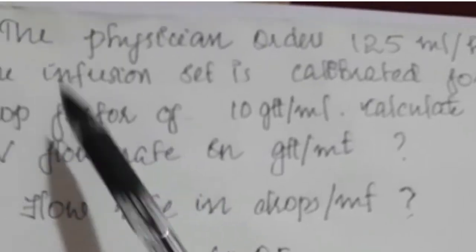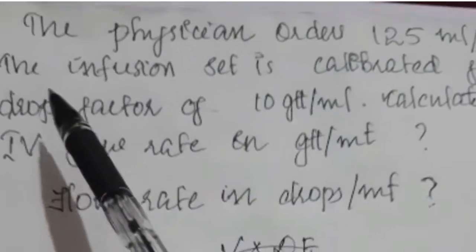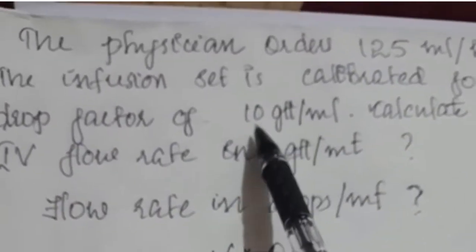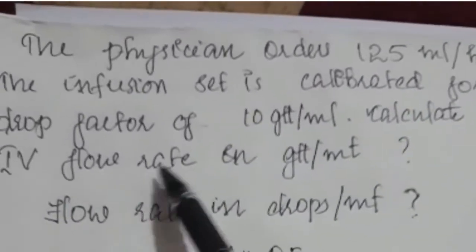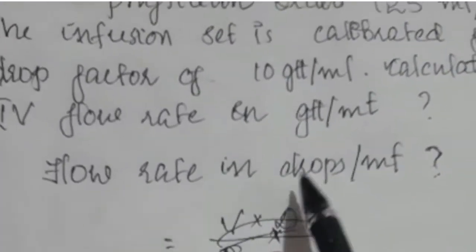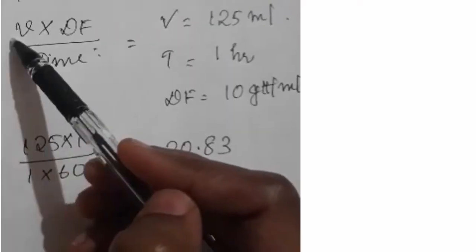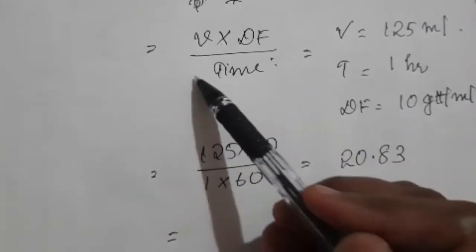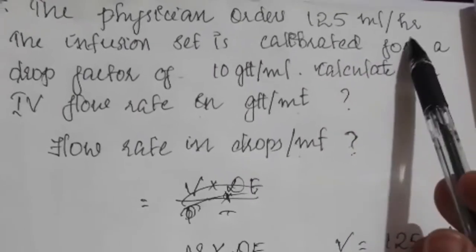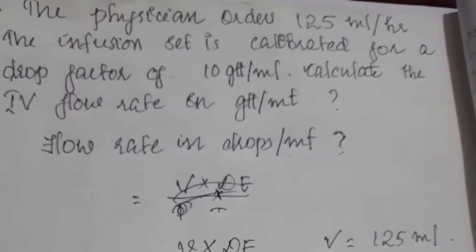Here is an example: the physician orders 125 mL per hour. The infusion set is calibrated for a drop factor of 10 gtt per mL (10 drops per mL). Calculate the IV flow rate in gtt per minute. The formula for flow rate in drops per minute is: volume multiplied by drop factor, divided by time in minutes. Here the volume is 125 mL, time is 1 hour, and drop factor is 10 gtt per mL.